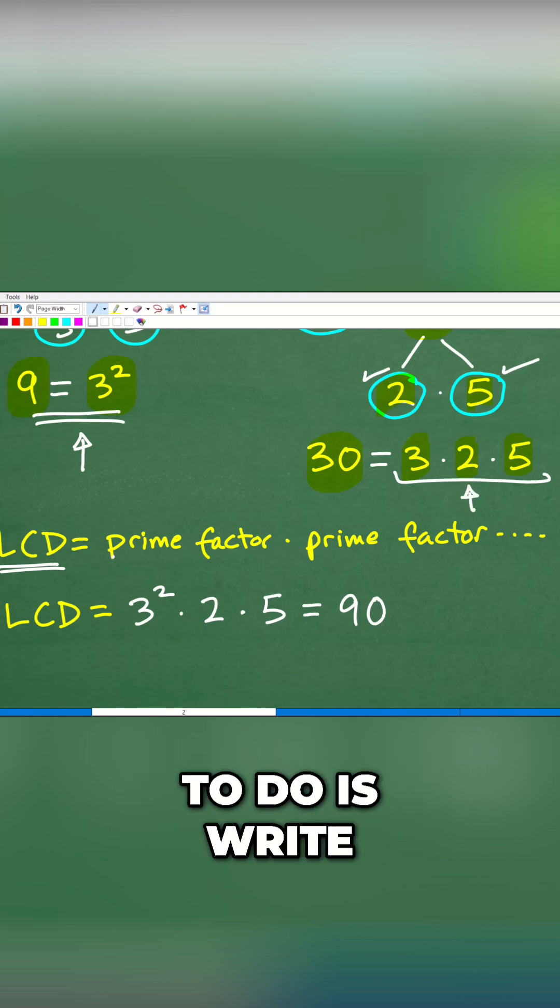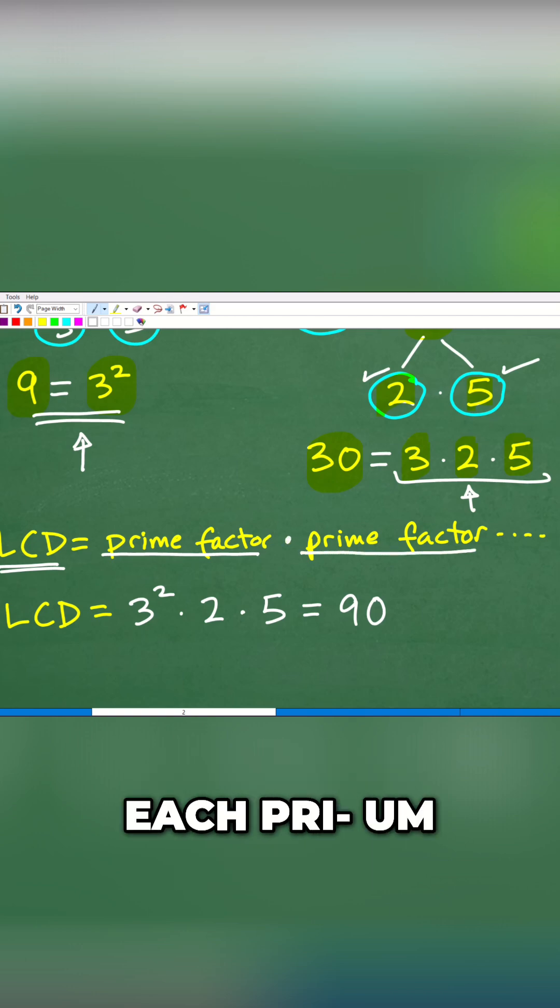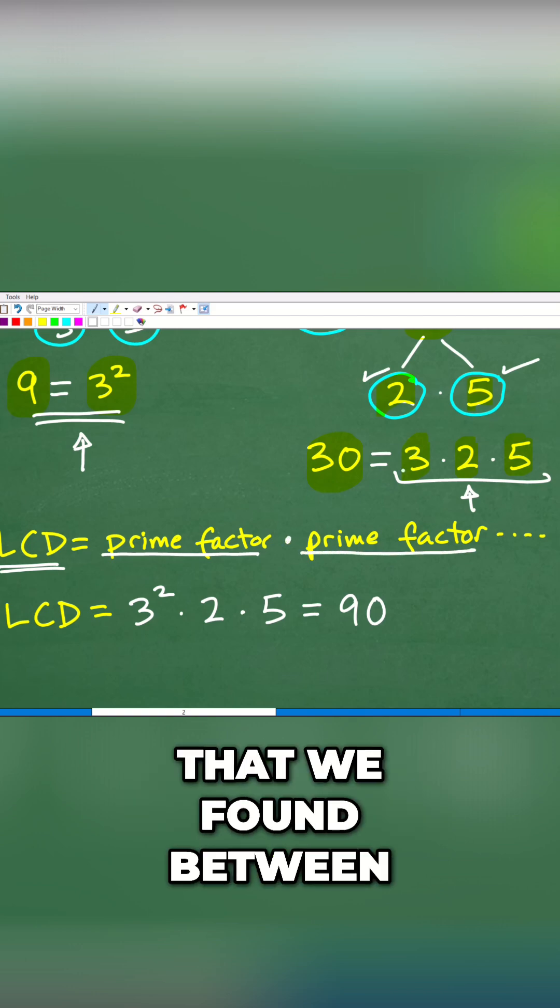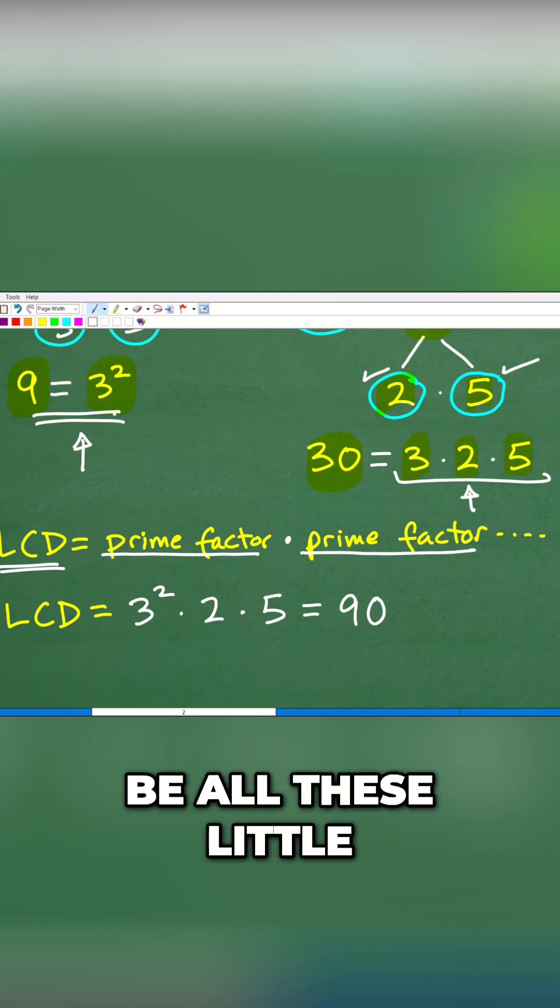So what we need to do is write each prime factor. And we're going to multiply all the prime factors that we found between the two numbers. So it's going to be a product, and the factors of that product are going to be all these prime factors.